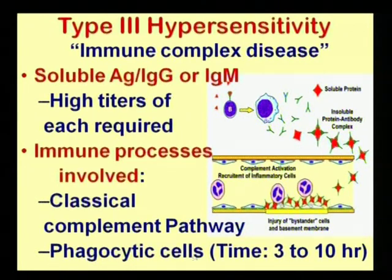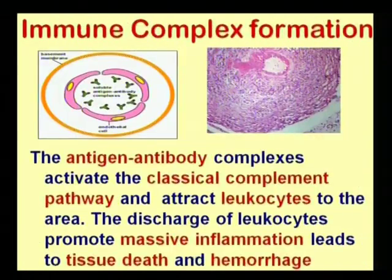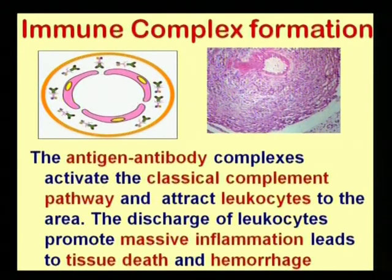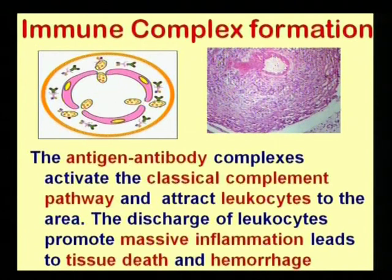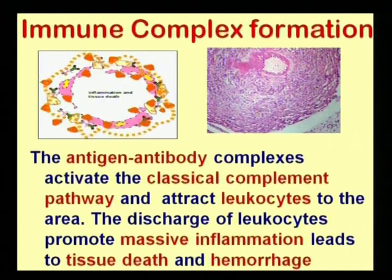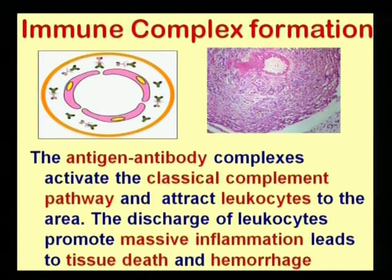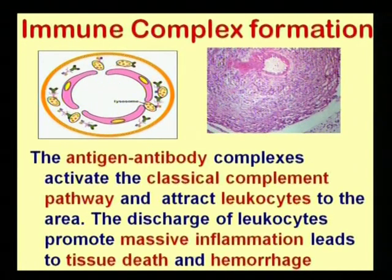This complex is also formed under normal conditions and is eliminated by blood phagocytic cells. However, when the concentration of antigen-antibody complexes is too high, they cannot be removed by phagocytic cells and instead activate the complement system present in the serum. The activated complement attracts phagocytic cells, causing massive inflammation, tissue death, and hemorrhage.